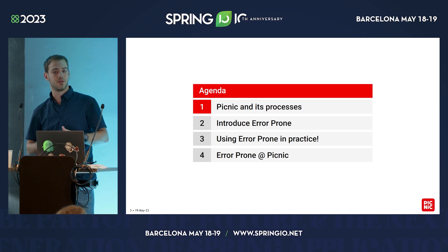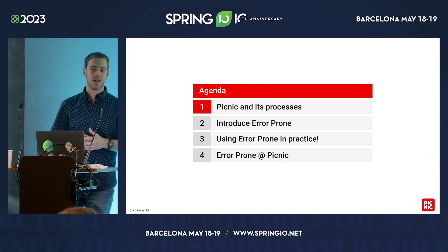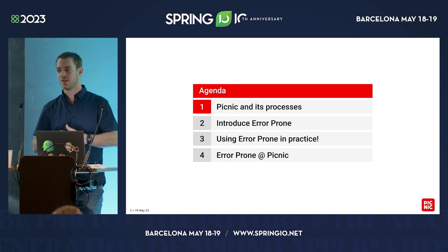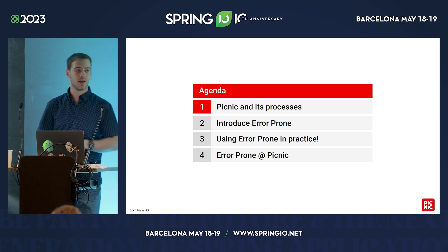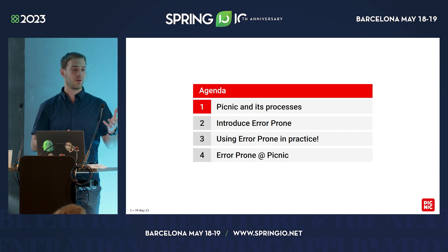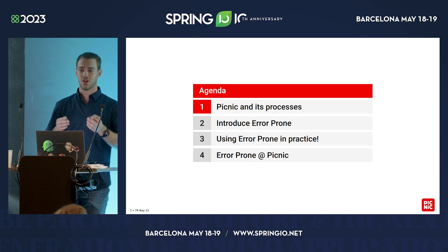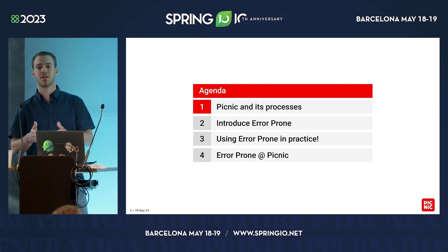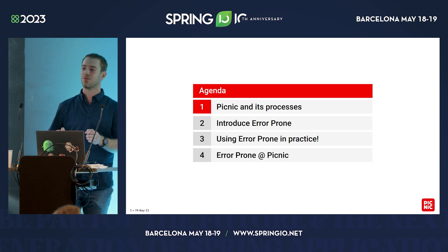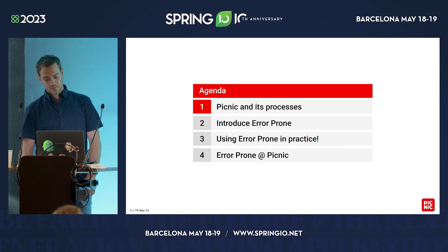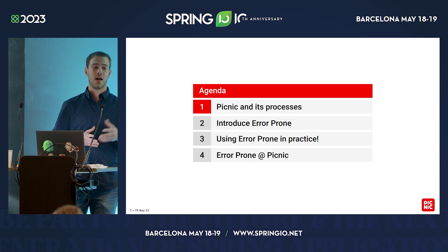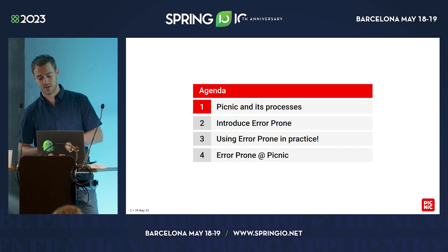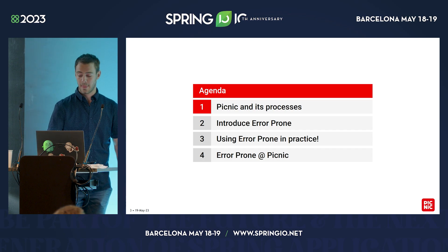First I'm going to give a little more context on Picnic and tell you something about the processes we have revolving around code quality. I will introduce you to error-prone, and show you how you can actually start using it in your code base — that's really the goal of today's talk. After that, I'm going to show you how we use error-prone at Picnic and share some best practices and lessons learned.